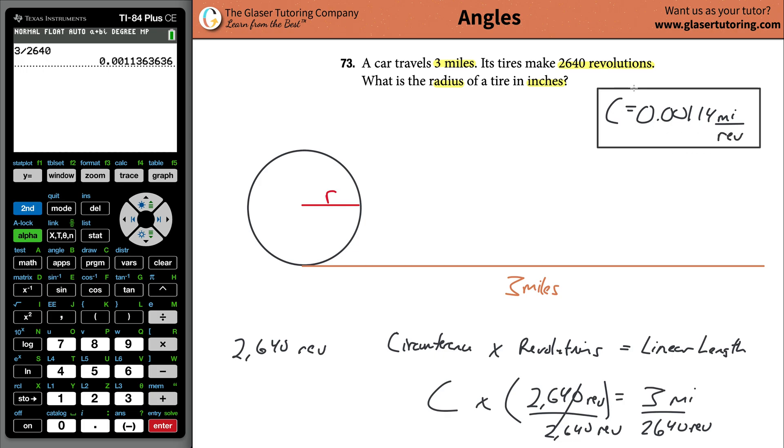Now, I know that sounds a little strange, but this is basically 1,000th of a mile. That should kind of make sense. The circumference of a tire should be quite small if we measured it in miles. It's a linear length per revolution, per one revolution. That's actually what the circumference is.